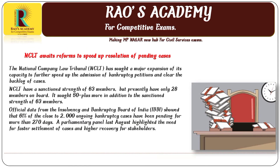The National Company Law Tribunal has sought a major expansion of its capacity to further speed up the admission of bankruptcy petitions and clear the backlog of cases. NCLT has a sanctioned strength of 63 members but presently has only 28 members on board. It sought 50 more members in addition to the sanctioned strength of 63. As per official data from the Insolvency and Bankruptcy Board of India, 61% of the close to 2,000 ongoing bankruptcy cases have been pending for more than 270 days.